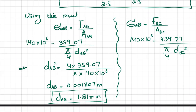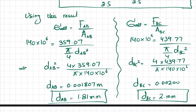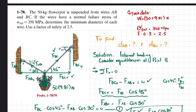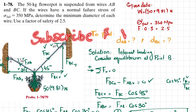Similarly, for wire BC: d_BC² equals 4×439.77 divided by (π×140×10⁶), so d_BC equals 0.00200 meters, or d_BC equals 2.00 millimeters. That is the answer to problem 1.78. I hope you enjoyed this video — if you are new to my channel, please subscribe and keep watching. Thank you.